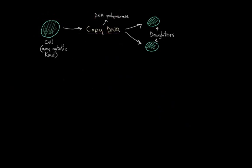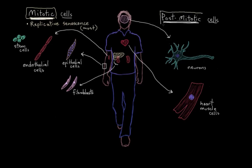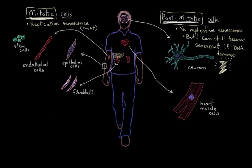Here's our mitotic cells that by definition are the only ones that can undergo replicative senescence. And over here are our post-mitotic cells. These guys can't reach replicative senescence because they don't replicate. But they can be induced to become senescent if their DNA is at risk of becoming damaged in basically the same way as I mentioned earlier.